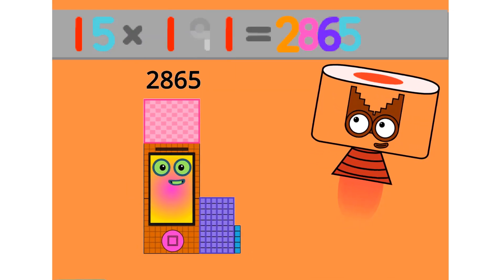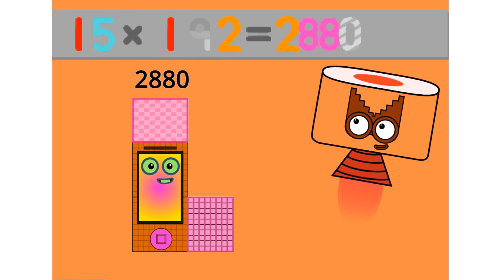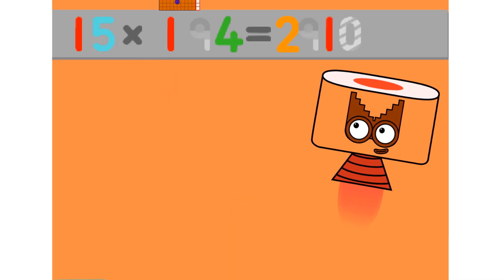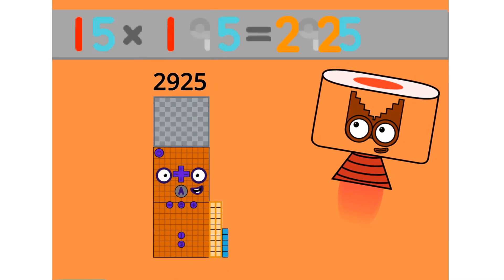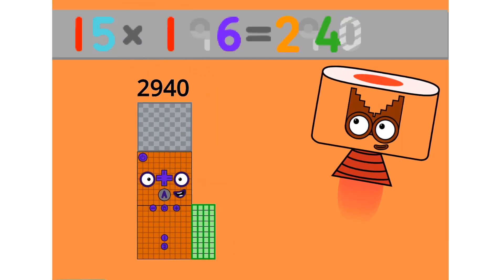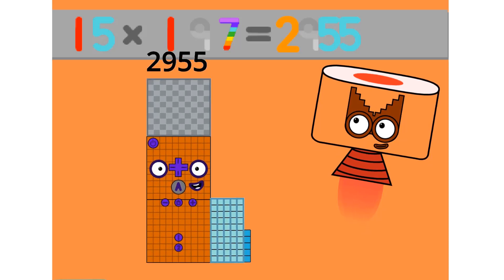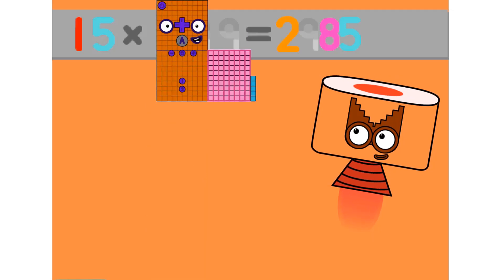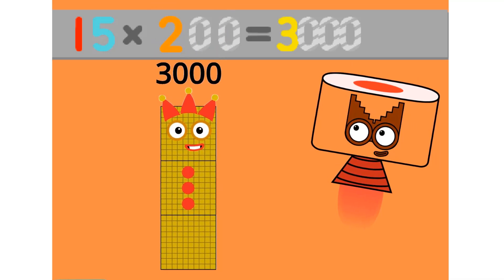15 times 191 equals 2865. 15 times 192 equals 2880. 15 times 193 equals 2895. 15 times 194 equals 2910. 15 times 195 equals 2925. 15 times 199 equals 2985. 15 times 200 equals 3000.